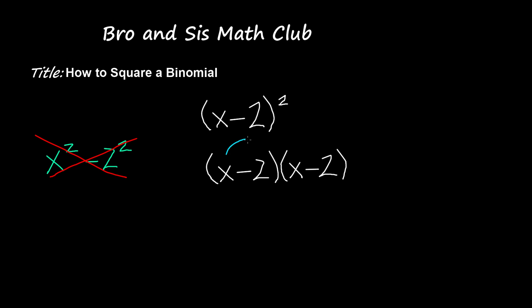I'm going to multiply x times the x which gives me x squared, and then x times negative 2 which gives me negative 2x.